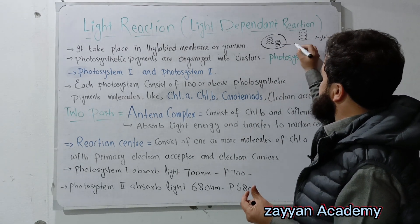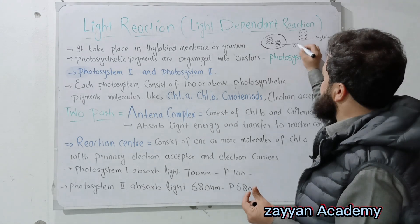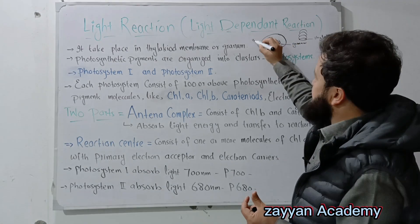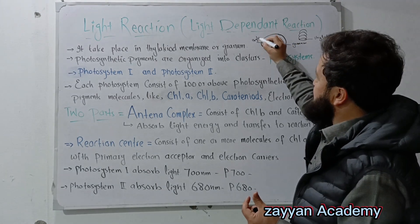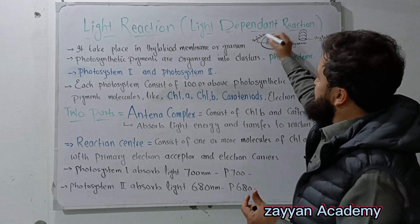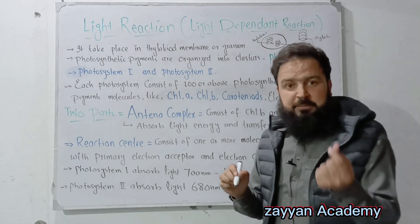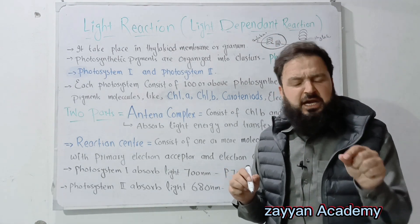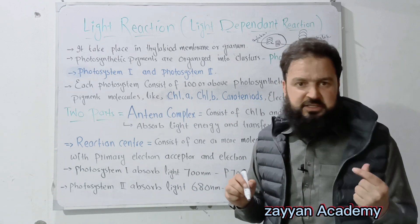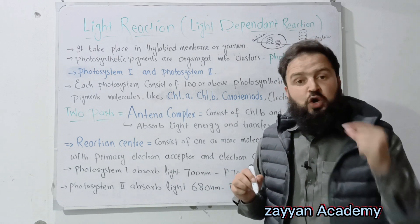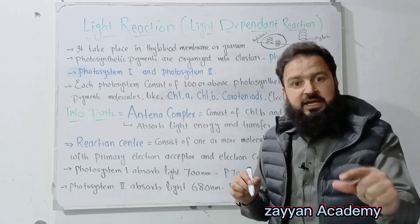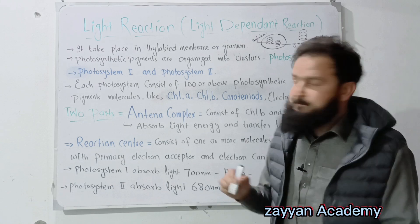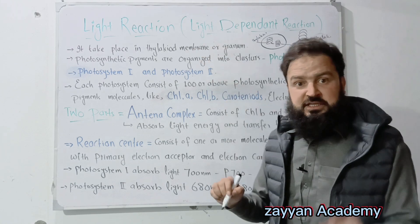This structure — granum and then thylakoid — the thylakoid membrane has always the light reaction. Simply say that the granum's main point is that the thylakoid membrane carries out the light reaction.